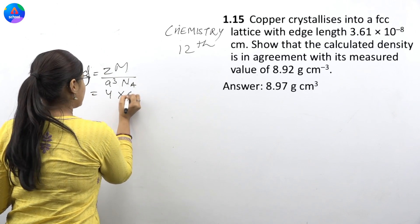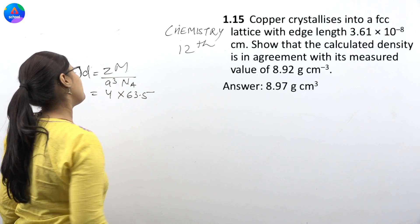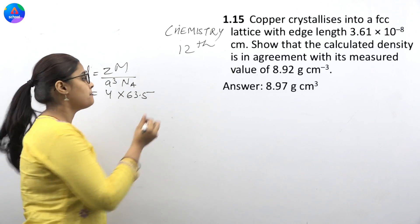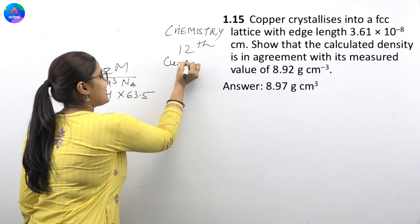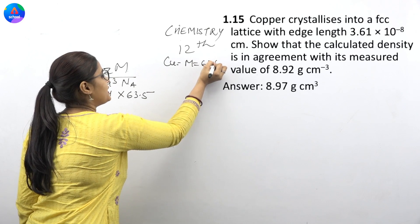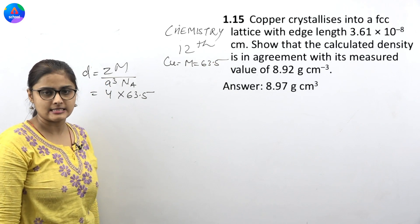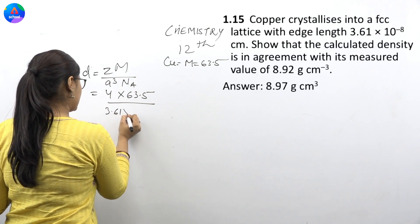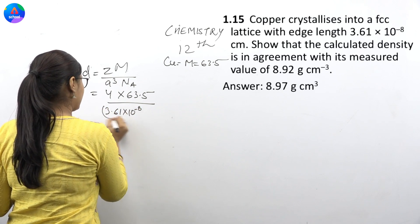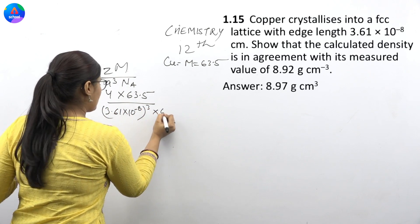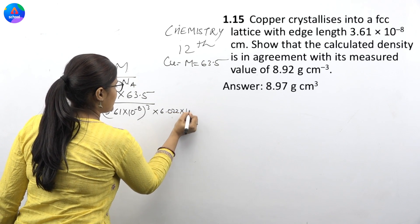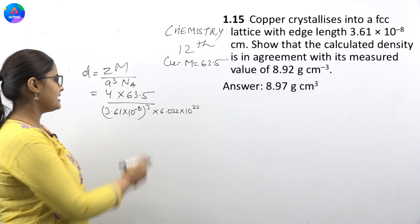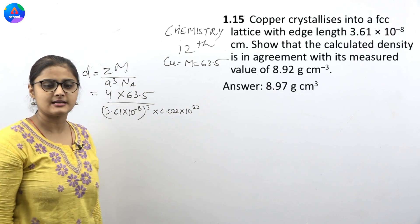This is 4 into 63.5. Why I have 63.5? Because I wrote copper. Copper, which is 63.5, which is the molecular mass. Do you remember? Okay. Next one is a cube, which is 3.61 into 10 to the power minus 8 cube. And then take 6.022 into 10 to the power 23 atoms. This is N.A., Avogadro's constant. Okay.